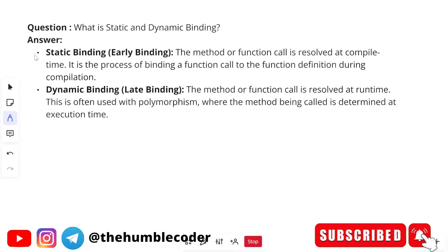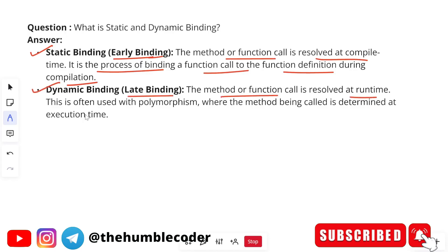There are two types of binding: static binding and dynamic binding. Static binding is also called early binding — the method or function call is resolved at compile time; it is the process of binding a function call to the function definition during compilation. Dynamic binding is also called late binding — the method or function call is resolved at runtime, often used with polymorphism where the method being called is determined at execution time.